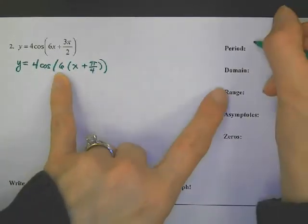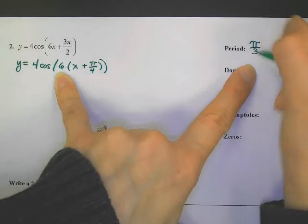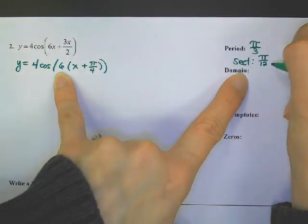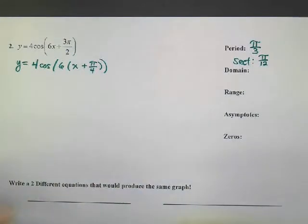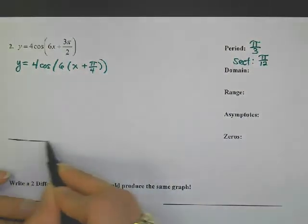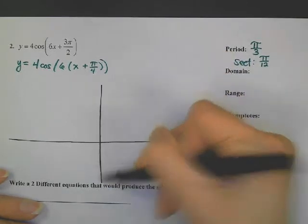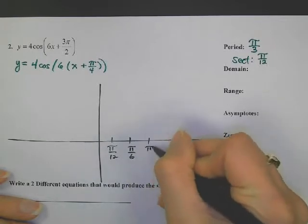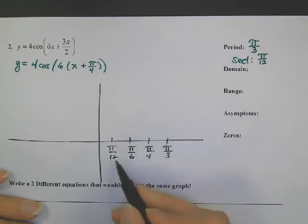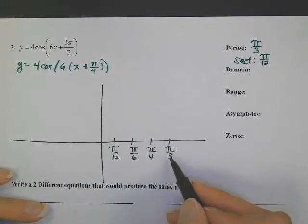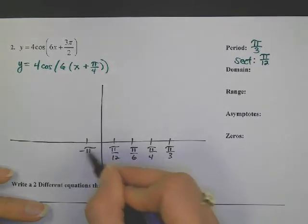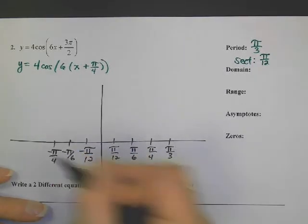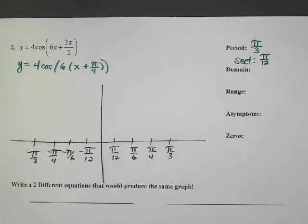The period of this graph is 2π over 6, which is π over 3. A section is found by dividing by 4, giving π over 12. Let's get this graph started — make sure you get your x-axis first with all the sections: 1 over 12, 2 over 12, 3 over 12, 4 over 12. Make sure you use the reduced forms. It finishes just in time, then we copy those and add negative π over 3.